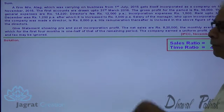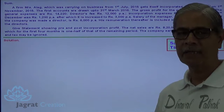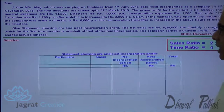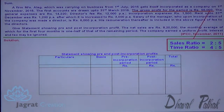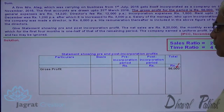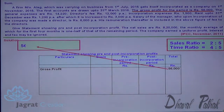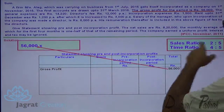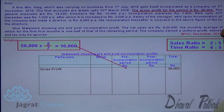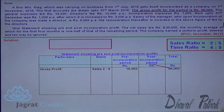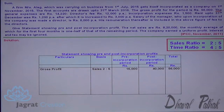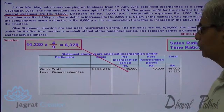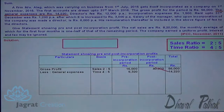Now I want to prepare a statement for bifurcation of expenses and income between pre and post incorporation periods. Gross profit is 56,000, bifurcated in the sales ratio 2:5. Pre incorporation gets 2/7 × 56,000 = 16,000. Post incorporation gets 5/7 × 56,000 = 40,000. General expenses of 14,220 are distributed in the proportion of time, giving 6,320 pre incorporation and 7,900 post incorporation.